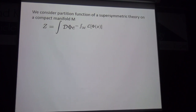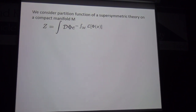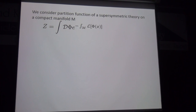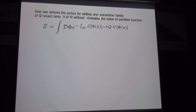Next, I explain partition function localization. We consider evaluating the partition function of a supersymmetric theory on some compact manifold. Supersymmetry depends heavily on the shape of the manifold, but we simply assume supersymmetry exists — meaning a Killing spinor exists on this manifold. The partition function is expressed as a path integral, where φ denotes the collection of fields in the supersymmetric theory and L denotes the Lagrangian. We can deform the action by adding a one-parameter family of Q-exact terms, TQV, without changing the value of the partition function.